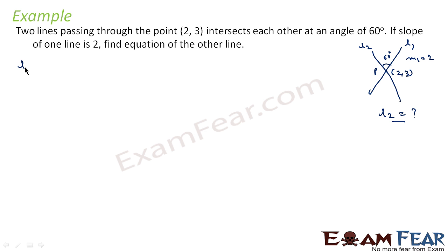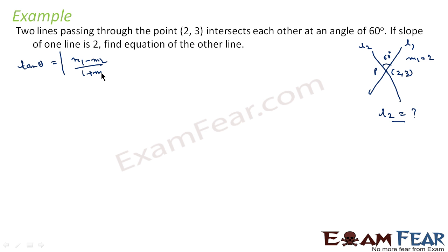We know this formula: tan θ, that is the angle between any two lines, is equal to the modulus of (m1 minus m2) divided by (1 plus m1·m2).